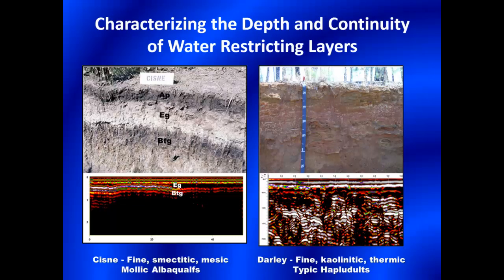A major use of GPR has been the identification and characterization of root and water-restricting layers. The images on the left are from an area of Seisney soils in Illinois. The E/Bt horizon boundary provides a continuous subsurface interface that can be traced laterally across the radar record. This interface restricts the flow and perches water. The images on the right are from an area of Darley soils in Louisiana. Darley soils contain layers of ironstone, which, where continuous, form root and water-restricting layers. On the radar record and in the soil profile, the ironstone appears highly fractured and discontinuous. These discontinuities provide narrow flow paths for the movement of soil water and contaminants.